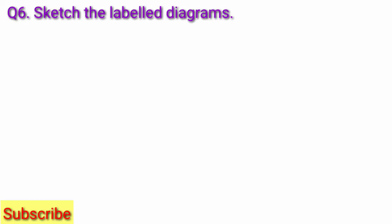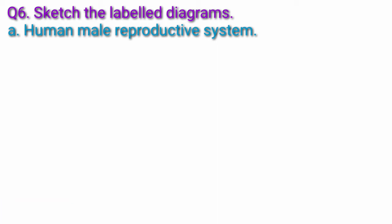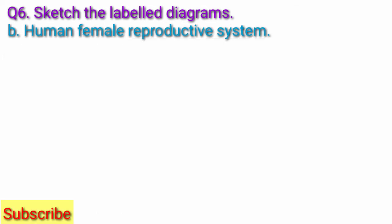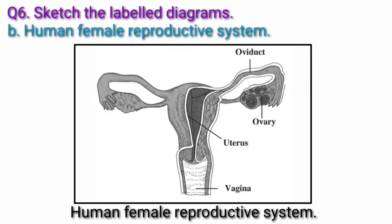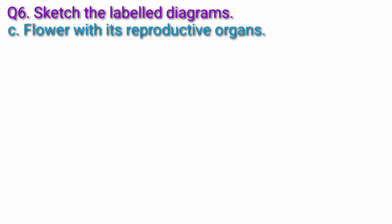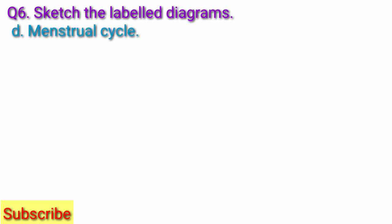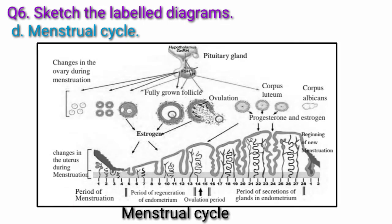Question 6: Sketch the labeled diagrams. A. Human male reproductive system — the diagram is given below. B. Human female reproductive system — the diagram is given below. C. Flower with its reproductive organs — the diagram of the flower with its reproductive organs is given here. D. Menstrual cycle — the diagram is given below.